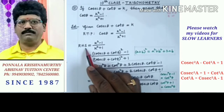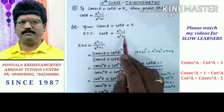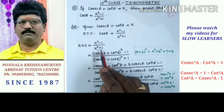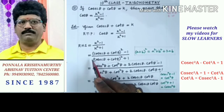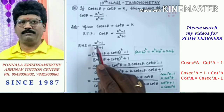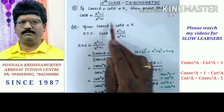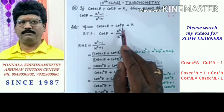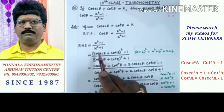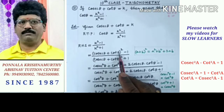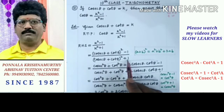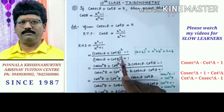We take the RHS here: k squared minus 1 by k squared plus 1. In place of k, we substitute cosec theta plus cot theta. So we get cosec theta plus cot theta whole squared minus 1, divided by cosec theta plus cot theta whole squared plus 1.